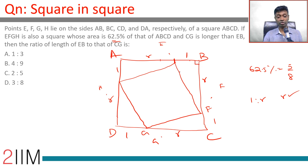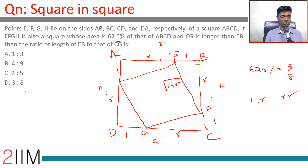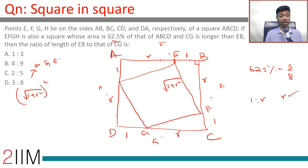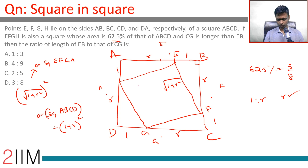Now the question becomes very simple. Using the Pythagorean theorem, EF equals √(1 + R²). So the area of square EFGH is (√(1 + R²))² = 1 + R². The area of square ABCD is (1 + R)².